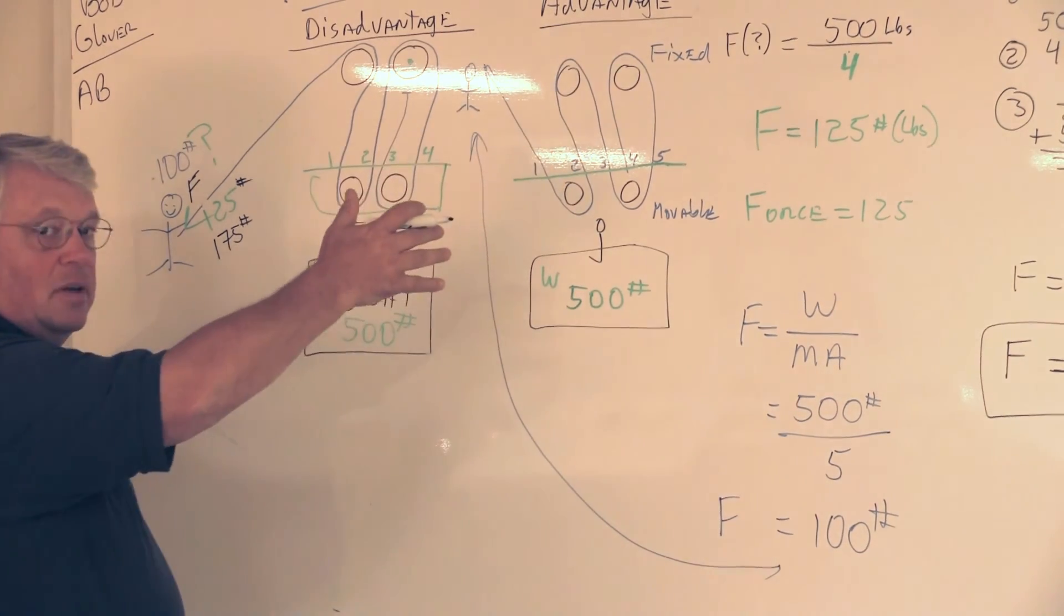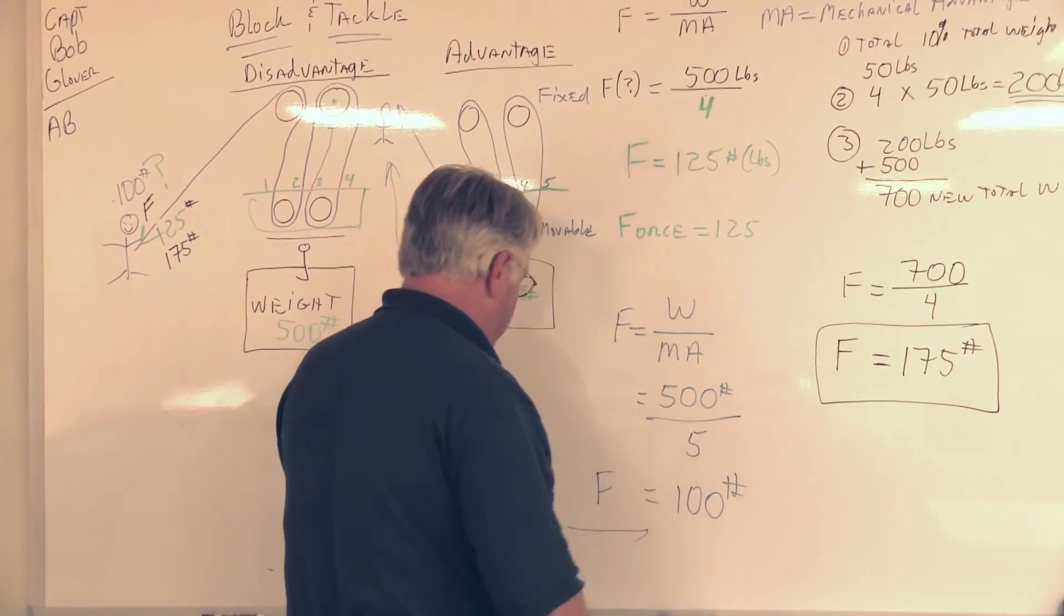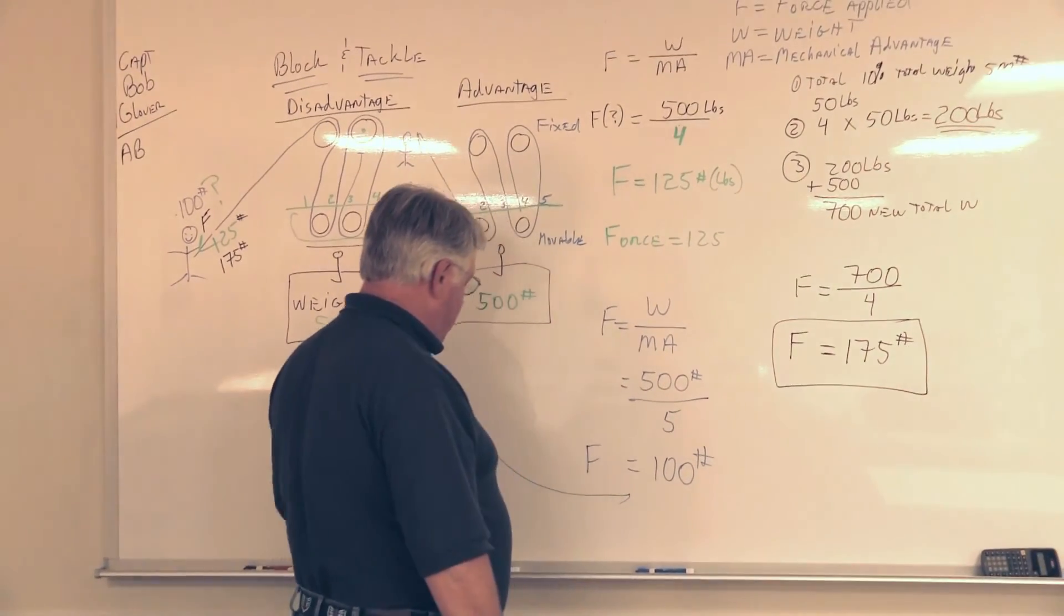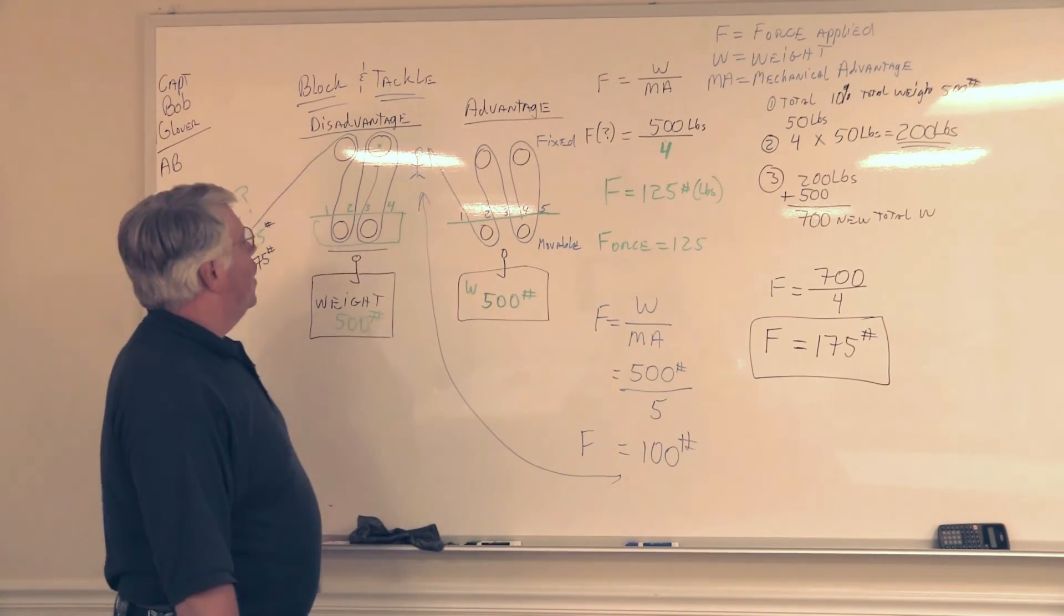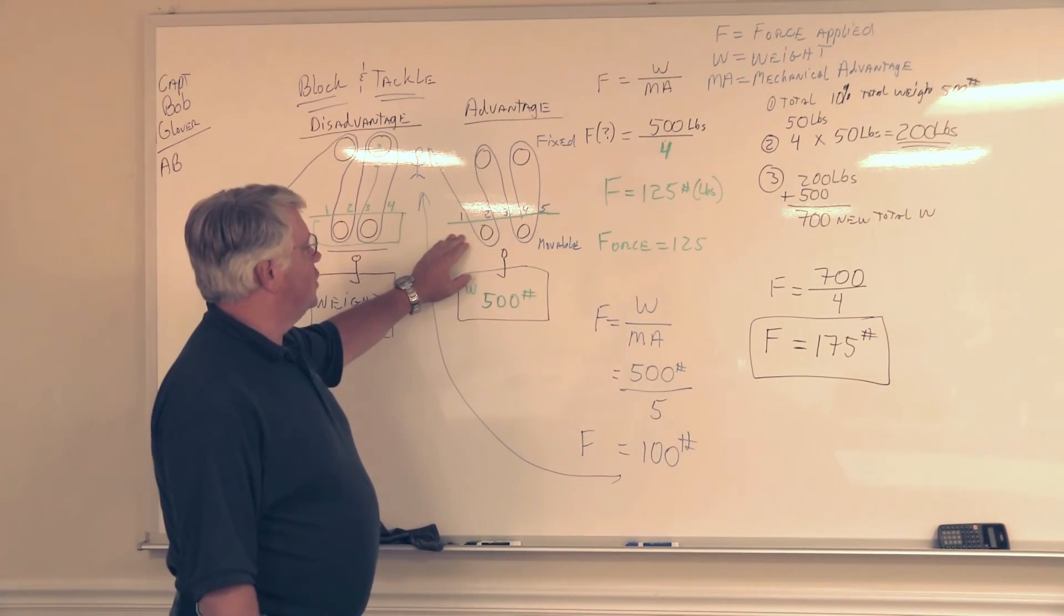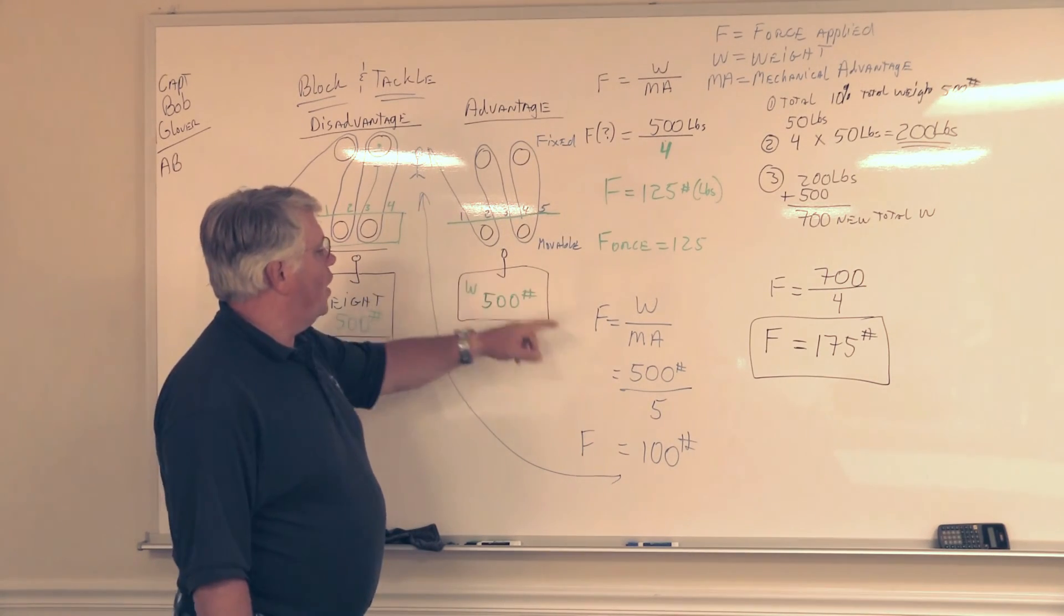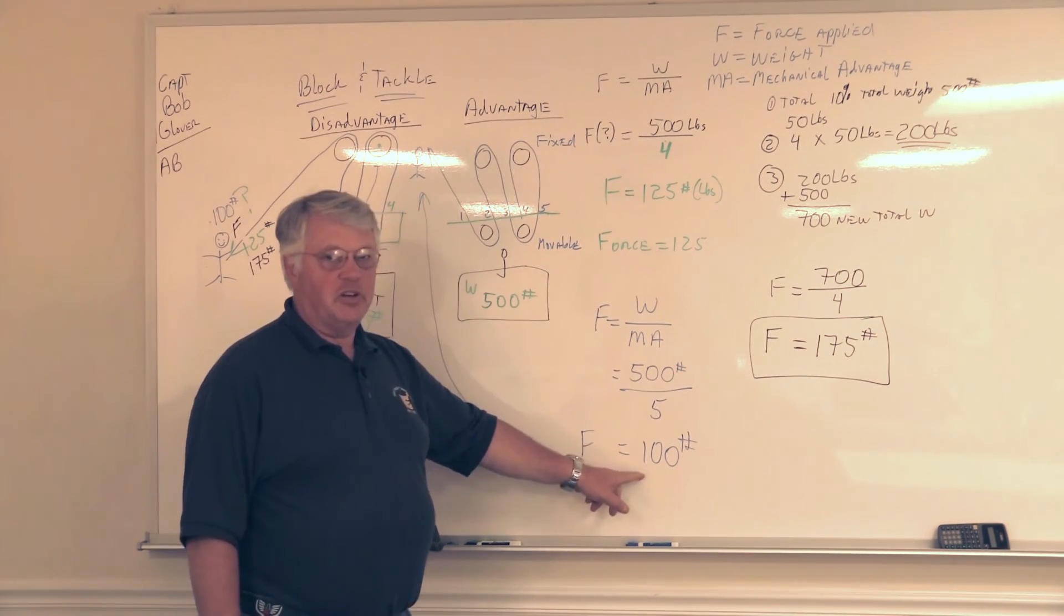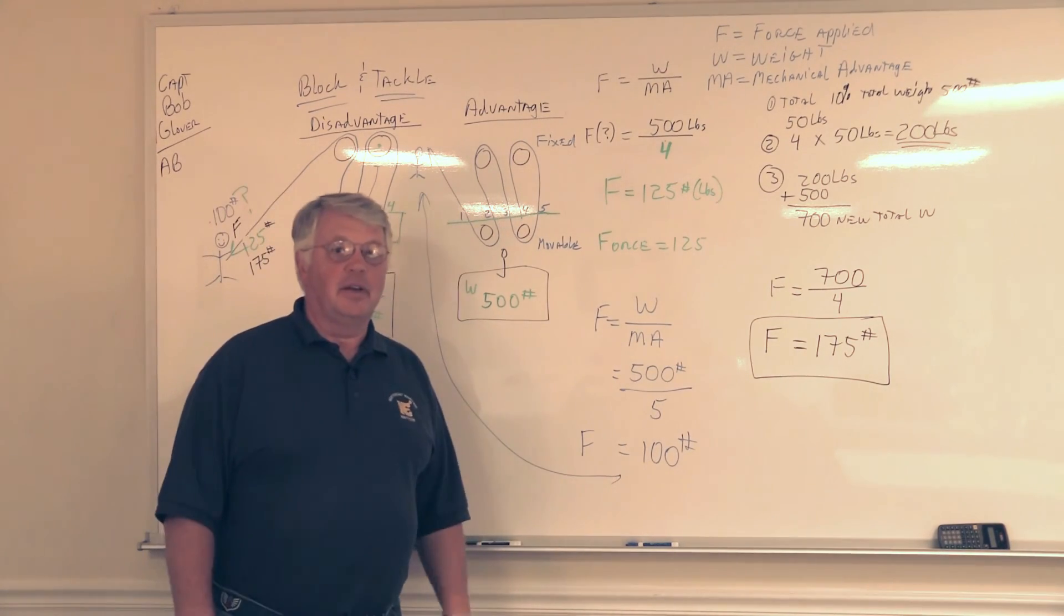You can't always do this. Sometimes your rigging situation constrains you to only doing it one way. But the key here is if you've got the opportunity to do it, you want to put the most amount of falls at the movable block. This creates this one higher mechanical advantage, which reduces our force. So this is the difference between disadvantage and advantage.